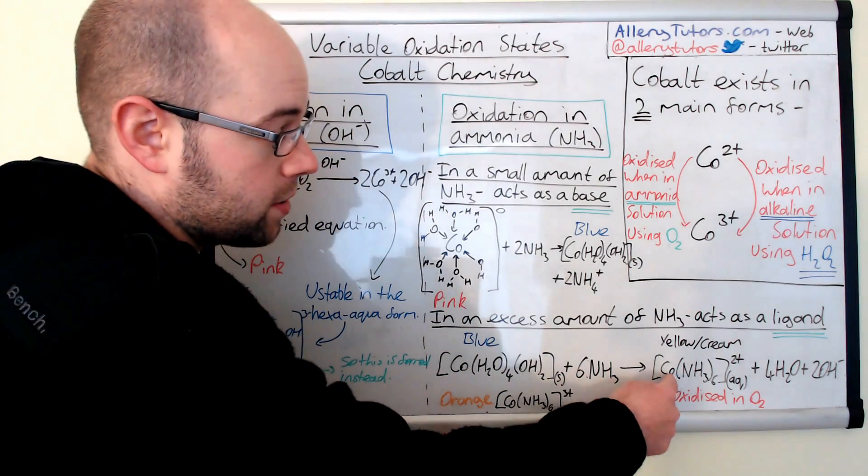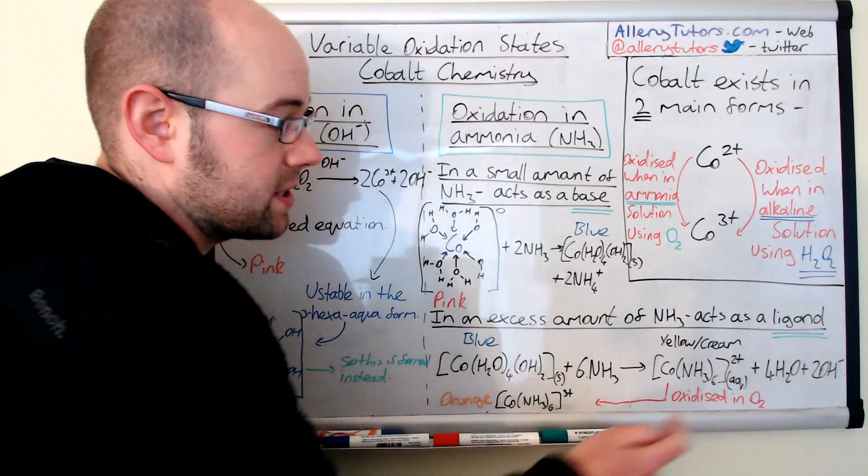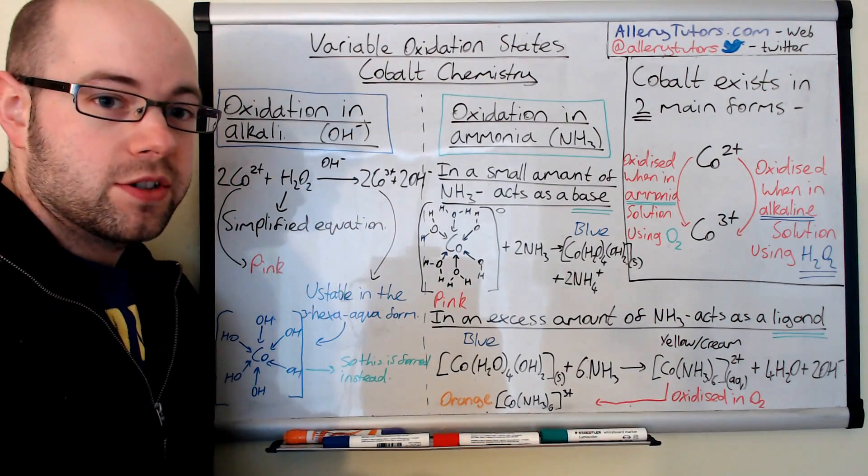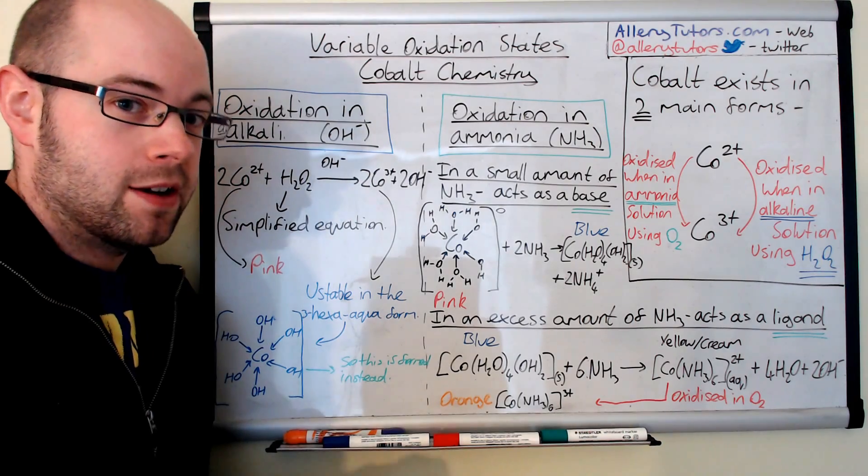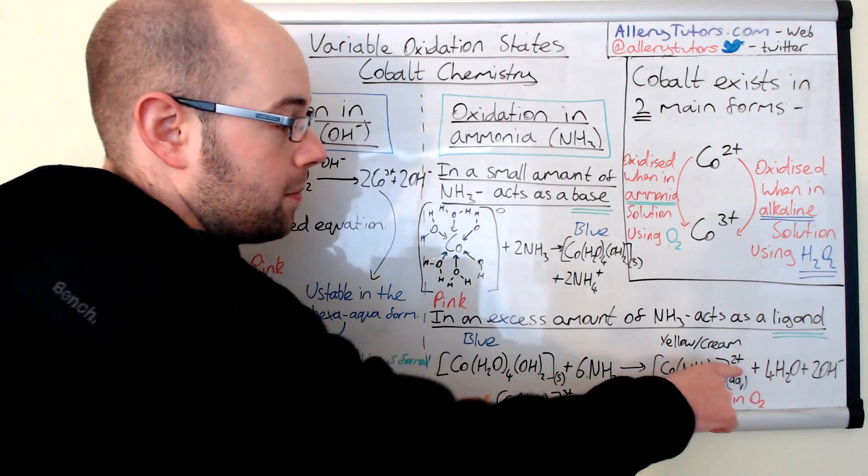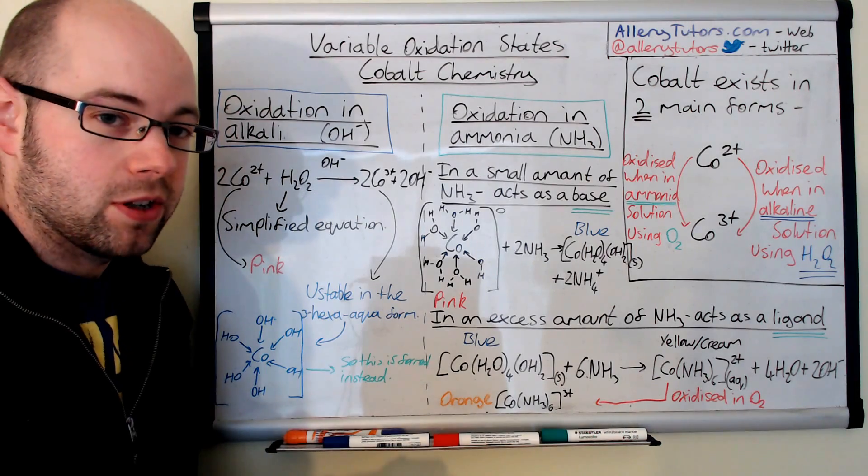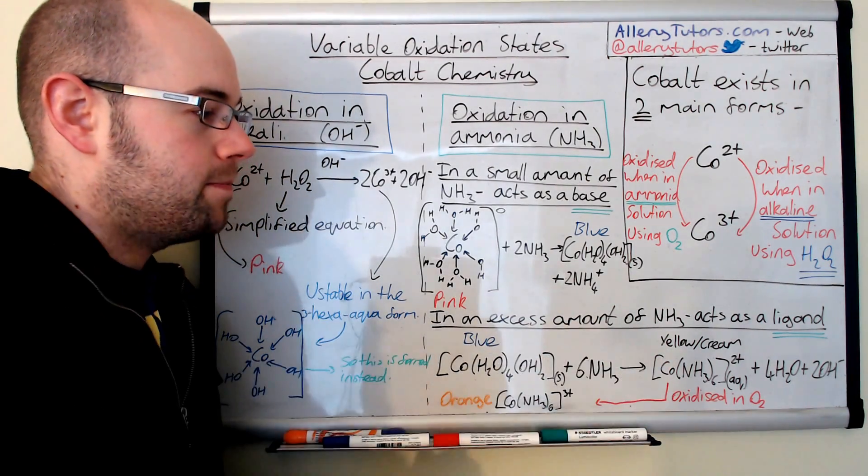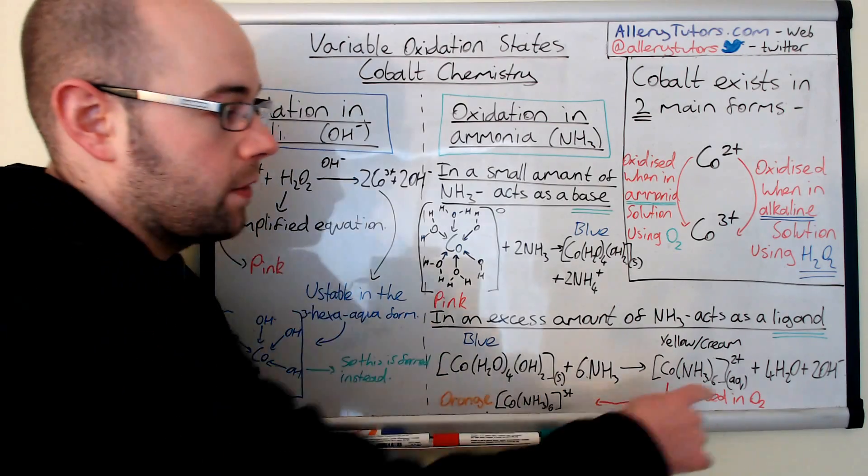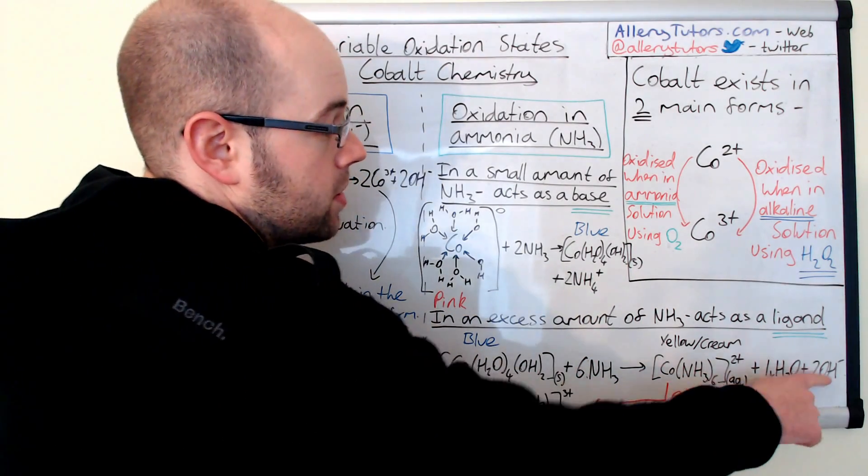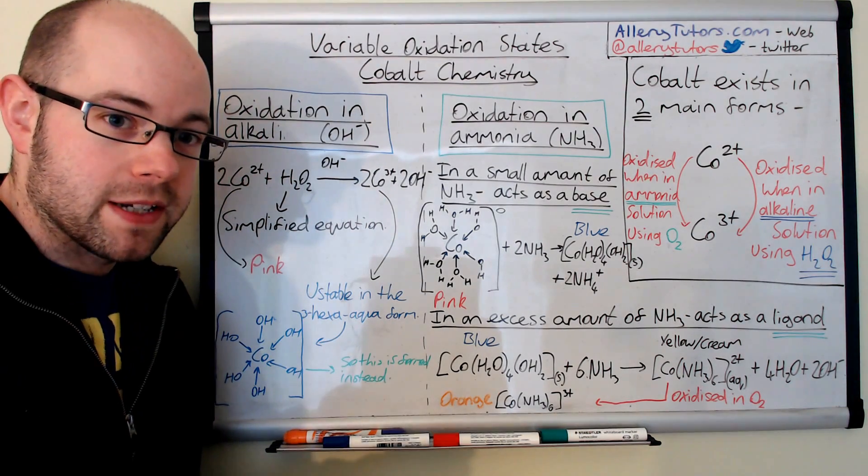We form this cobalt NH3, 6, aqueous, and this has got a 2 plus charge. So, effectively, we formed a solution again. The reason why we formed the solution is, in fact, that we've got a charged complex back again, and this is soluble in solution. So, this will form a yellow, creamy aqueous solution. And obviously, the ligands that were attached on here are now separated, so we have 4H2O and 2OH- on the right-hand side.